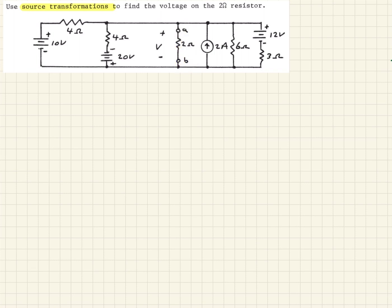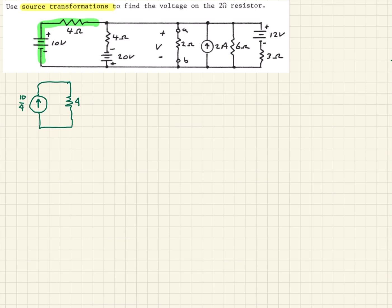Let's look at how this works using source transformation. We'll look at this first part here — instead of having a voltage source in series with a resistor, we can transform that. We'll have a current source, and we take the voltage divided by the resistance, so that's 10 over 4 for the current. Then we put that in parallel with this same resistor, which is 4 ohms.